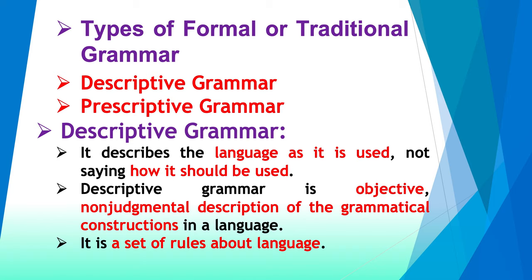Now we go back to the types of formal or traditional grammar. We have two types: the first is descriptive grammar and the second is prescriptive grammar. Let us first discuss descriptive grammar. Point number one: it describes the language as it is used — not saying how it should be used. Descriptive grammar just describes the language as it is used; it does not tell you how it should be used.